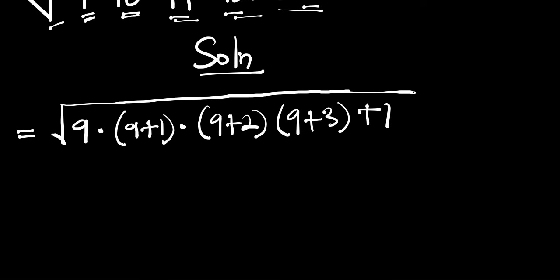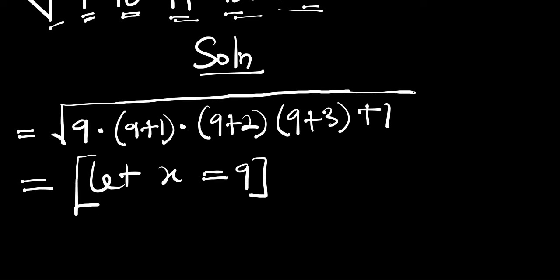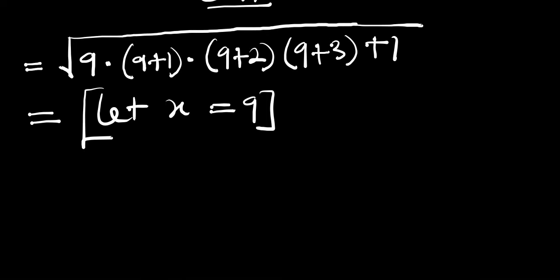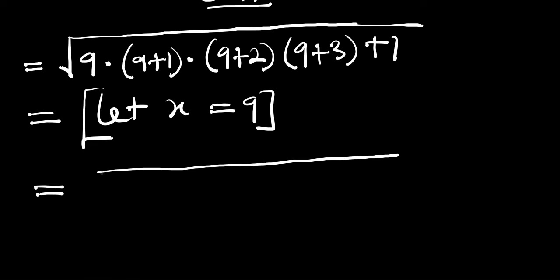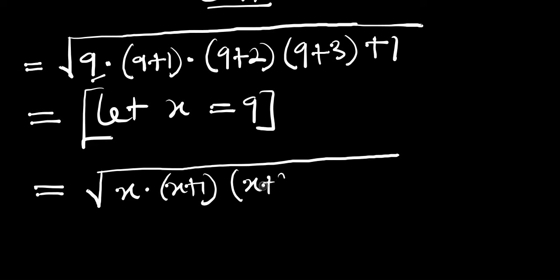The next thing we are going to do is let x be equal to 9. So wherever we have 9 we are going to replace it with x. So this is equal to the square root of x times x plus 1 times x plus 2 times x plus 3, then plus 1.